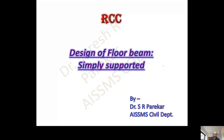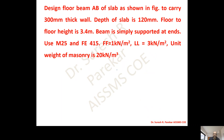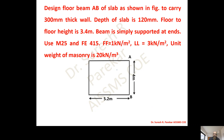Good evening. Today we are going to design a floor beam and beam, considering it as a simply supported beam. We have designed floor beam AB as shown in the figure for a given effective span, with an overhead slab carrying a 300 mm thick wall, slab depth 120 mm, floor-to-floor height 3.4 meters. The beam is simply supported at ends. Material: M25, Fe415. Floor finish: 1 kN/m², live load: 3 kN/m², unit weight of masonry: 20 kN/m³.